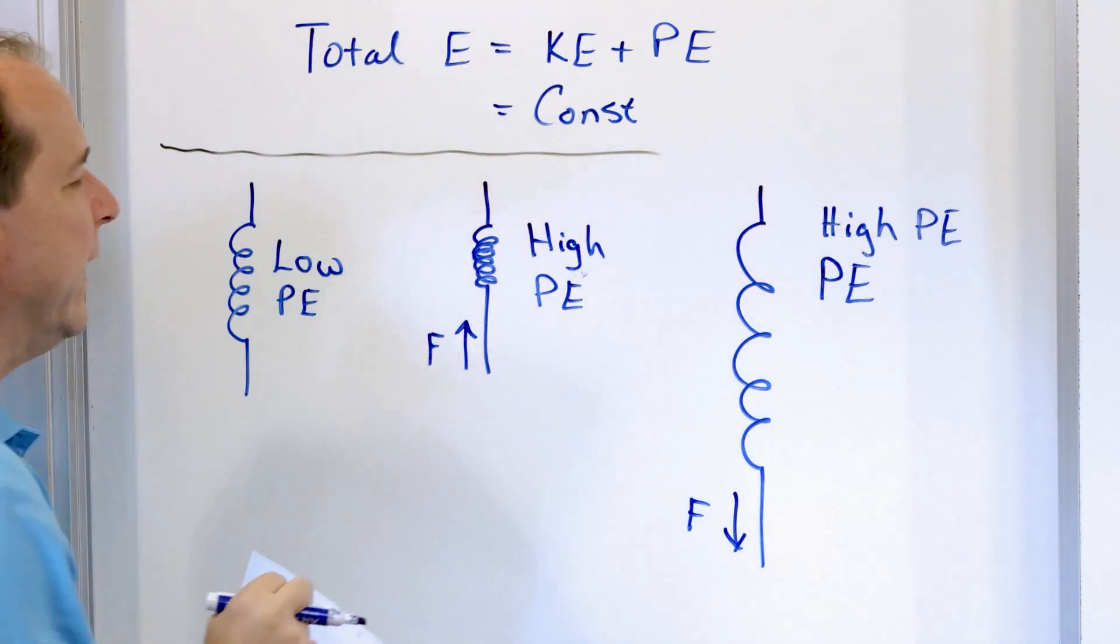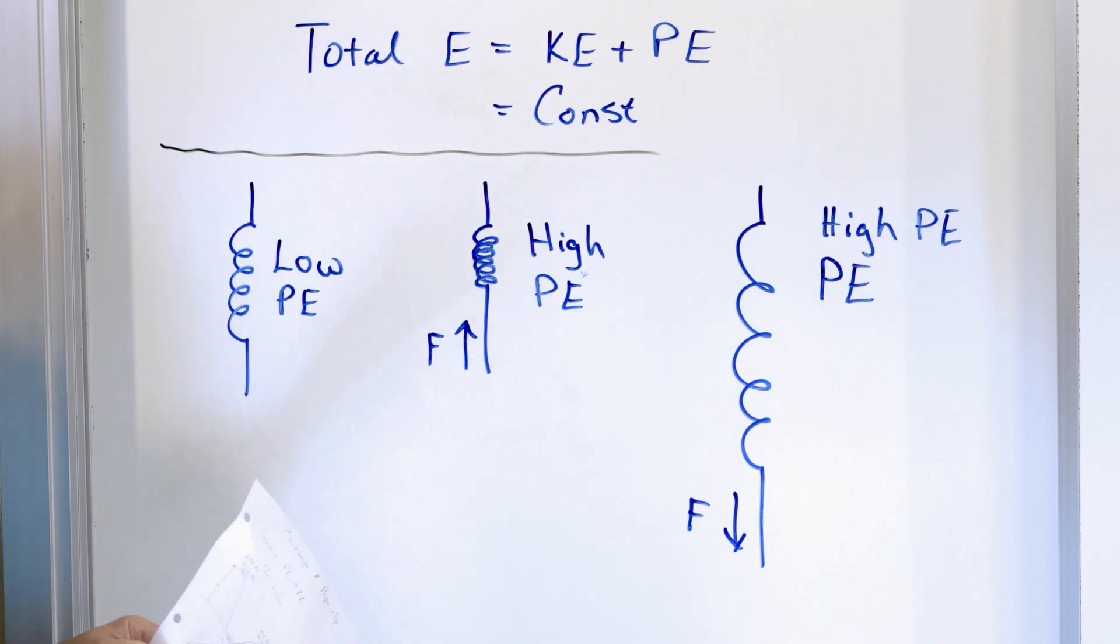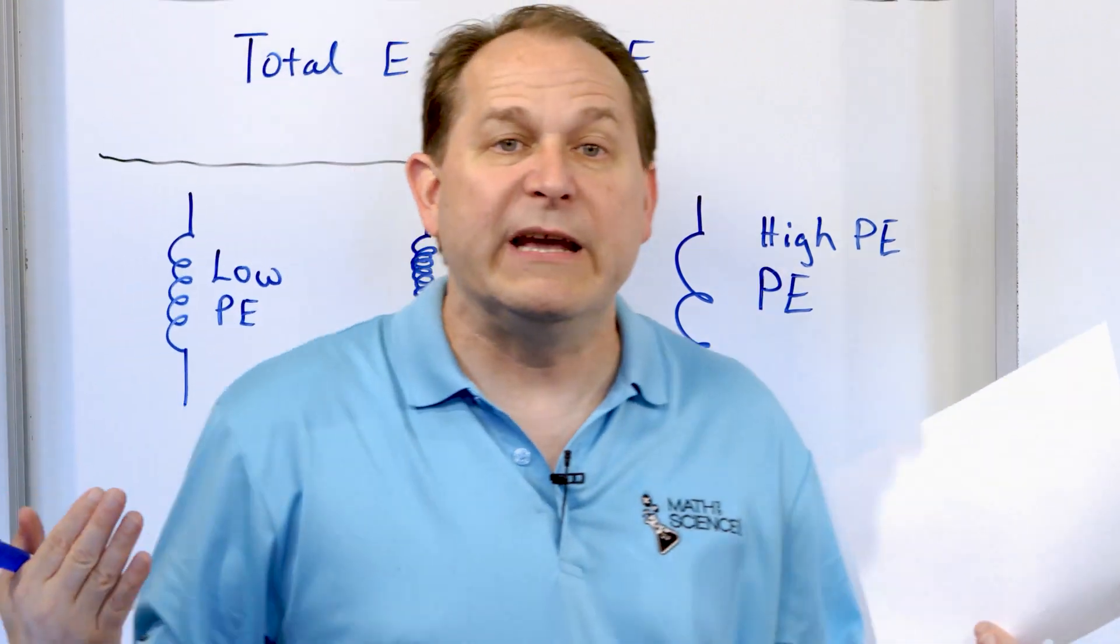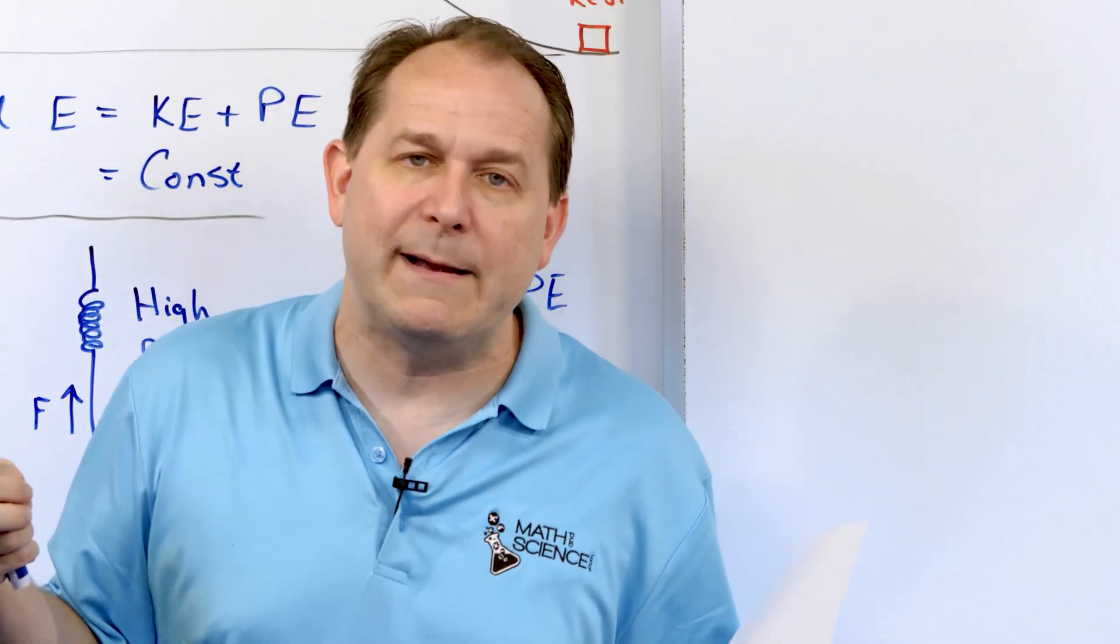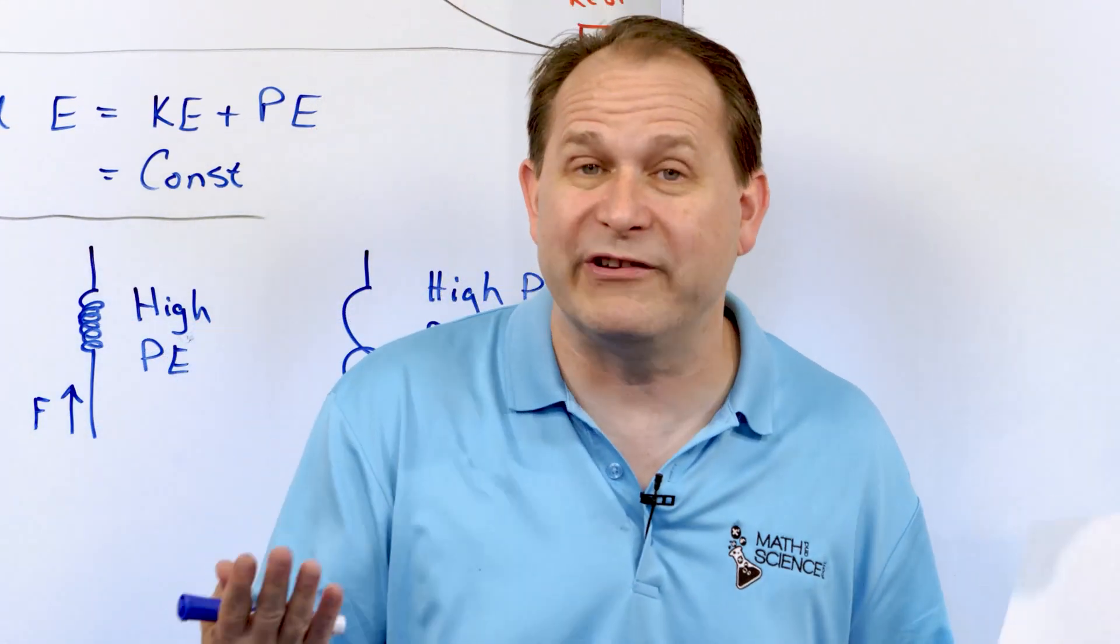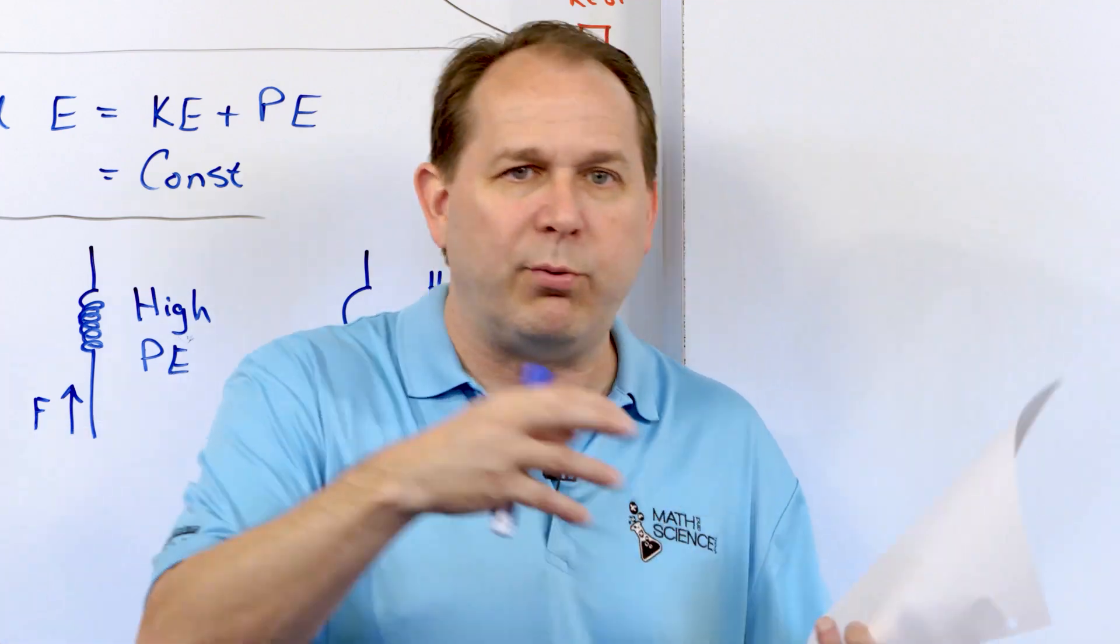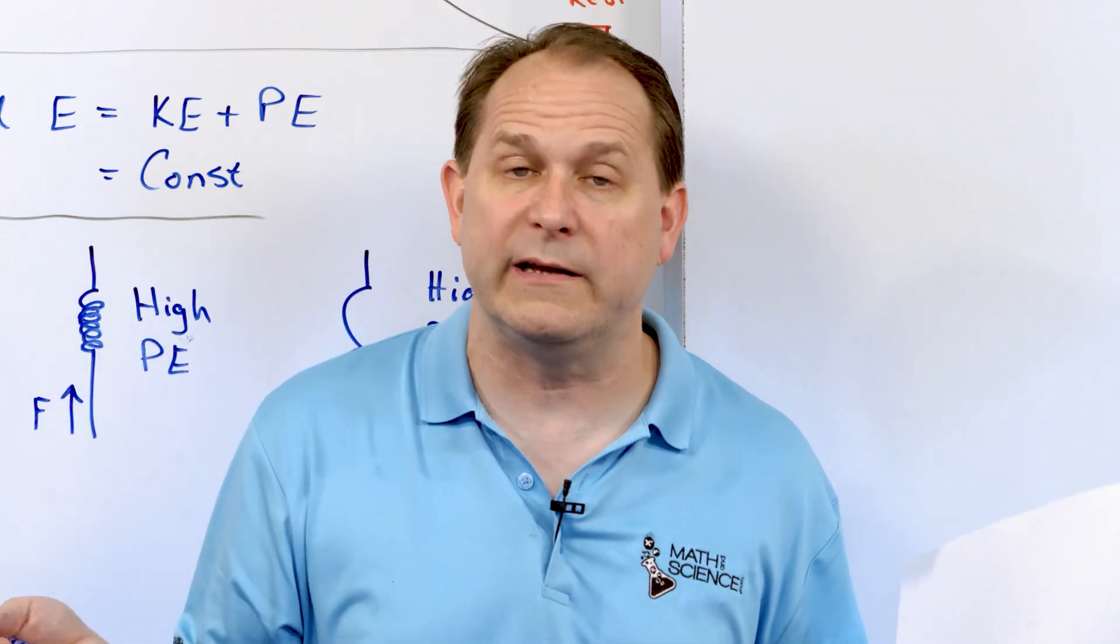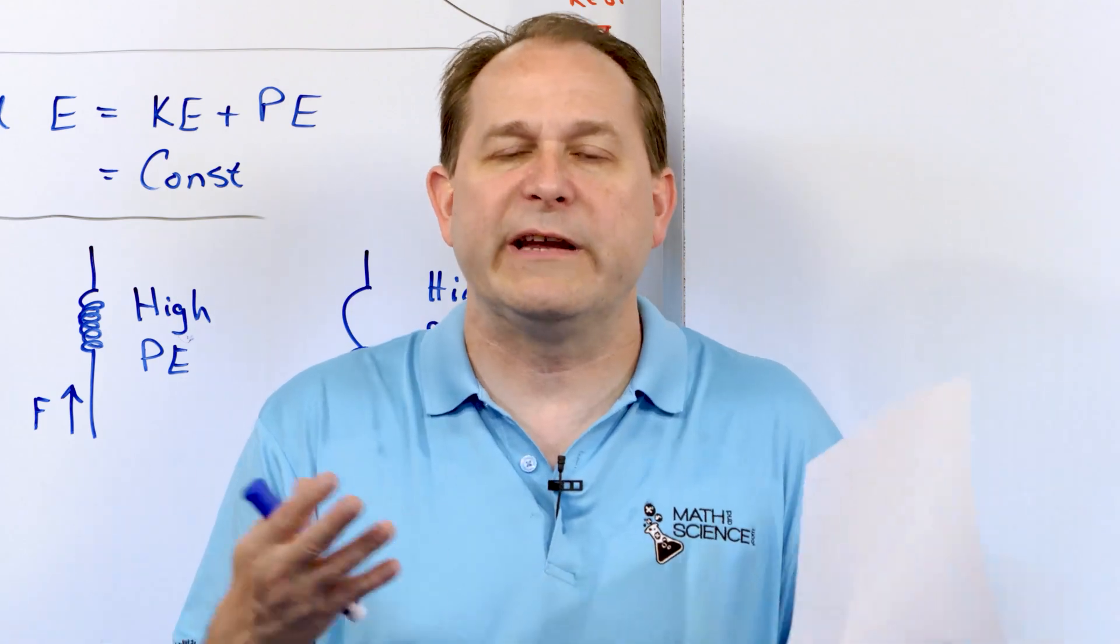I wrote PE twice, high potential energy, right? The point is, is that when you compress or expand the spring and then let it go, it's going to begin to move. It's going to convert that potential energy into motion, which is kinetic energy. Eventually, it'll boing-oing-oing back and forth, converting back and forth into potential and kinetic forms, and eventually it'll stop.